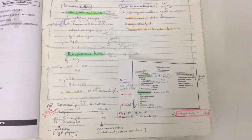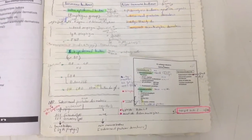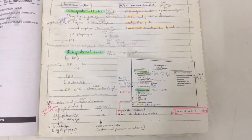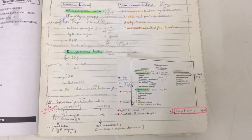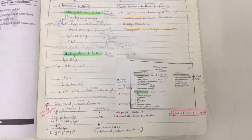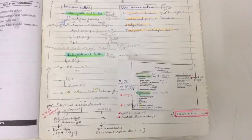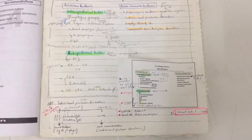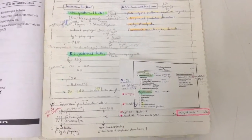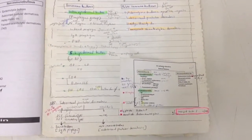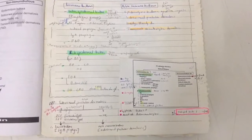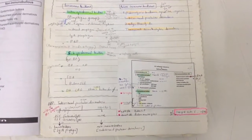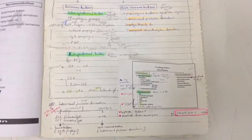The intra-epidermal bulla is the pemphigus group. The sub-epidermal bulla is the bullous pemphigoid group: bullous pemphigoid, cicatricial pemphigoid, herpes gestationis, epidermolysis bullosa acquisita, bullous systemic lupus erythematosus, dermatitis herpetiformis, and chronic bullous disease of childhood.